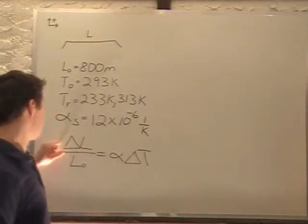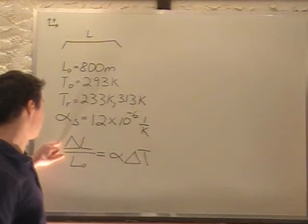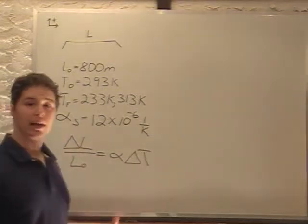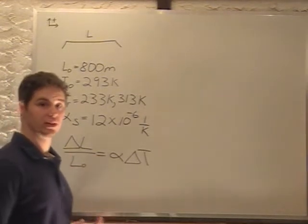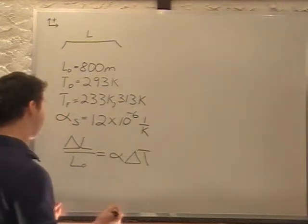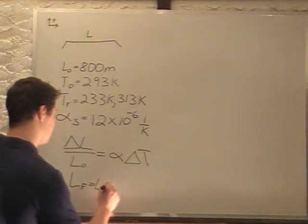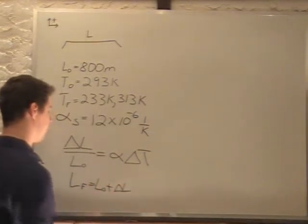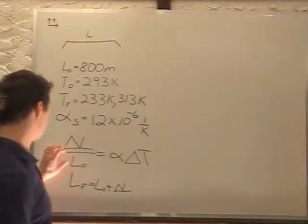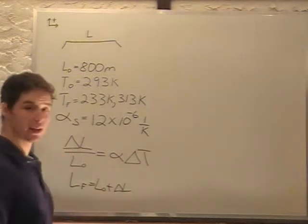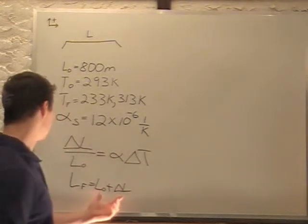We're looking for delta L, which will be how much it changes by, and we want to add that to its original length to give us our final answer. So our final length is going to be equal to L0 plus delta L. If we solve for delta L and put it in this equation, that will be what we need to get our final answer.